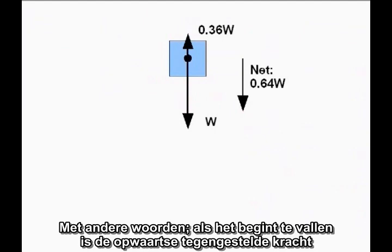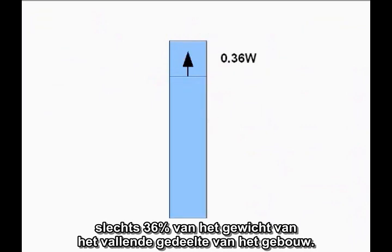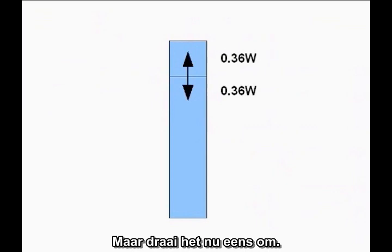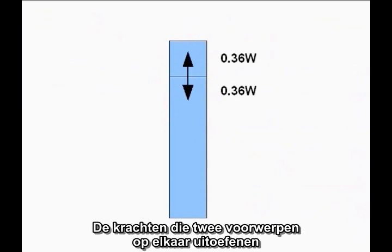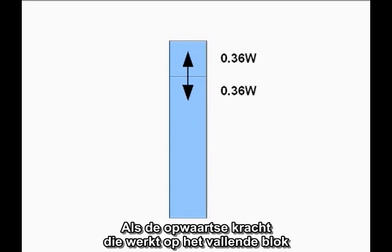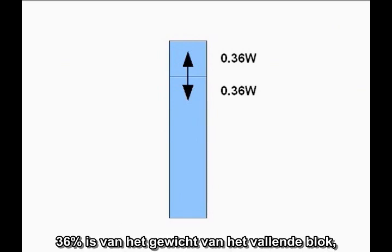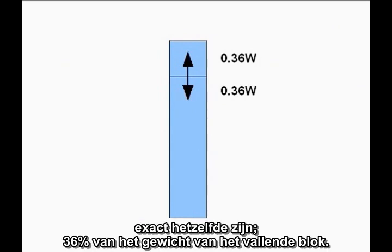In other words, once it starts falling, the upward resistive force is only 36 percent of the weight of the falling section of the building. Newton's Third Law says interactions between objects work both ways — the forces two objects exert on each other are always equal and opposite. If the upward force acting on the falling block is 36 percent of the weight of the falling block, the downward force exerted by the falling block must be exactly the same: 36 percent of the weight of the falling block.